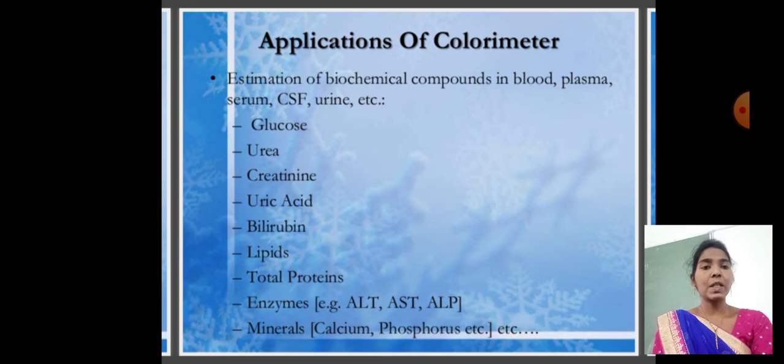First we need to prepare the solution. We need to clean the cuvette using tissue or cotton to get maximum absorbance and correct values. We need to clean the cuvettes properly. Now we need to measure the color solutions using the colorimeter.